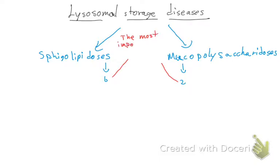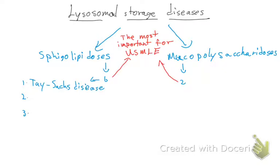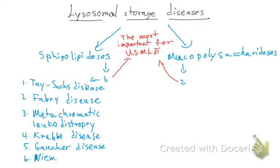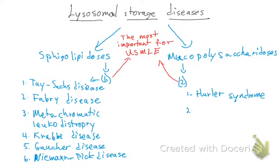The sphingolipidoses are: number one, Tay-Sachs disease; number two, Fabry disease; number three, metachromatic leukodystrophy; number four, Krabbe disease; number five, Gaucher disease; and number six, Niemann-Pick disease. For the mucopolysaccharidoses, we have two: Hurler syndrome and Hunter syndrome.